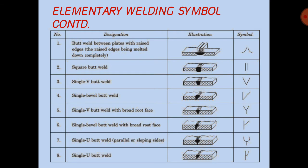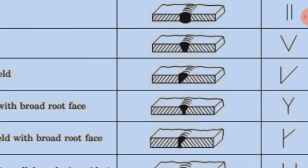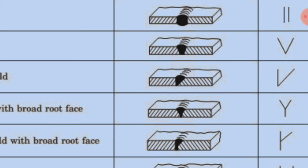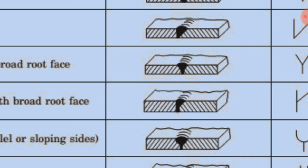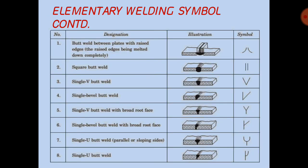For single bevel butt, you can see the symbol shown here. Then single V with broad root face — for this we need to provide a provision at the bottom for the weld to penetrate, so the symbol looks like a Y but with one face straight. Then single U butt weld, shown with a U shape, where we also allow penetration downward, meaning the root is broadened.